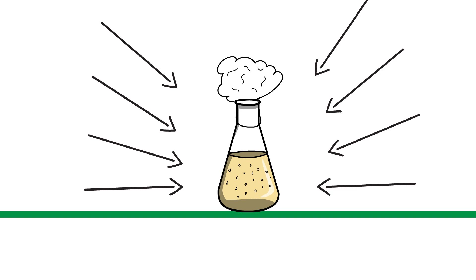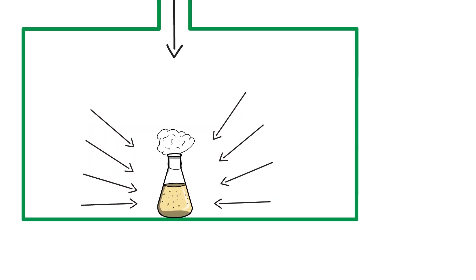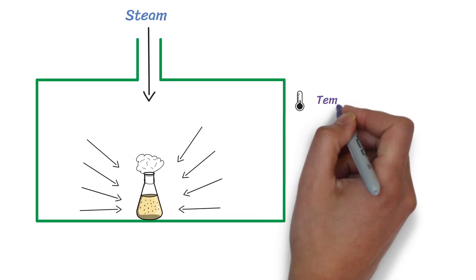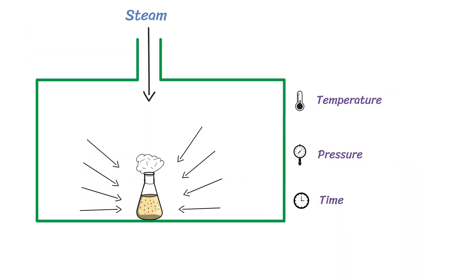The penetrated heat denatures the proteins of microorganisms and kills them effectively. The combination of temperature, pressure, and time ensures that even the most heat-resistant spores are destroyed.